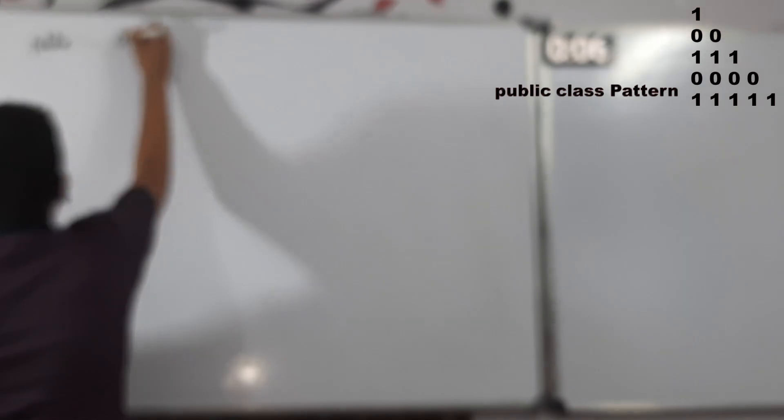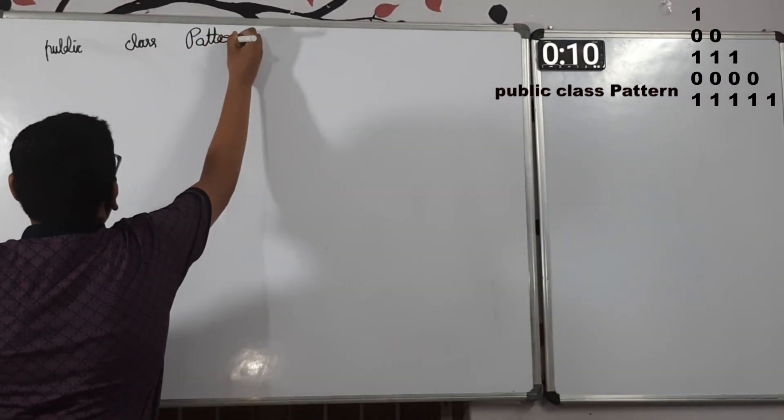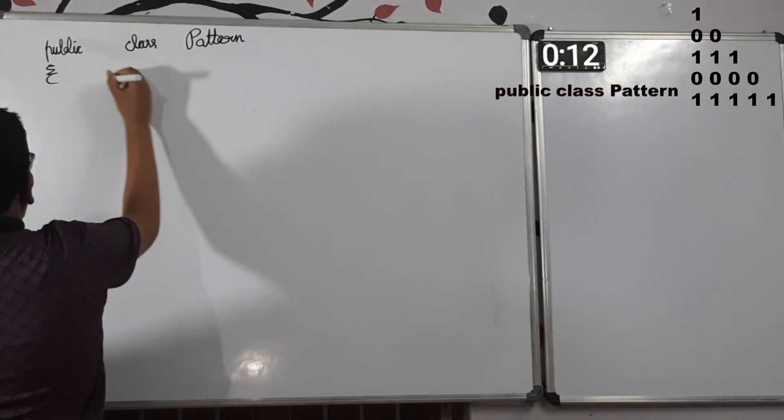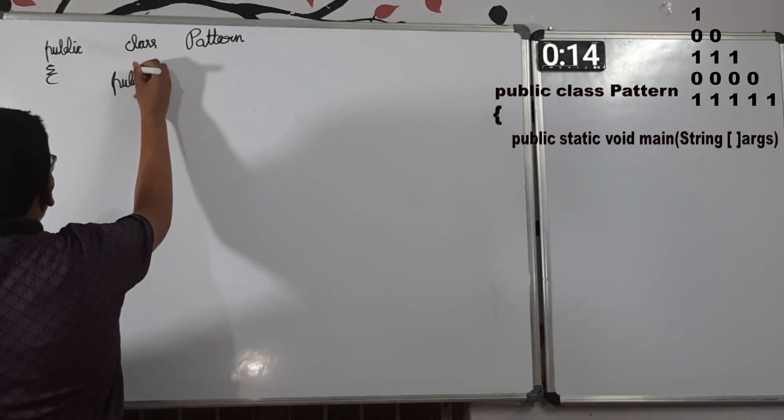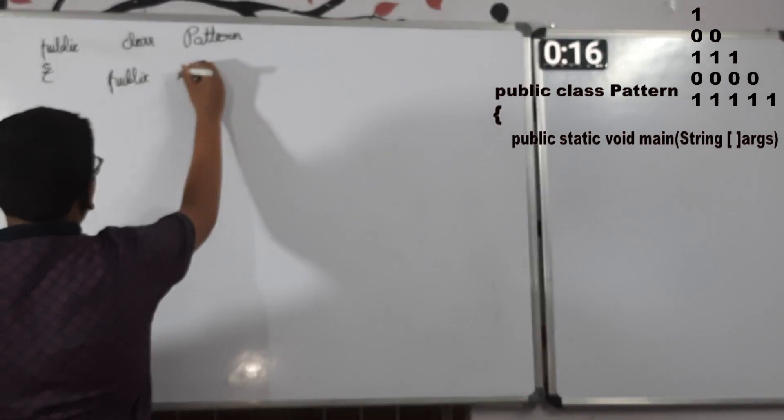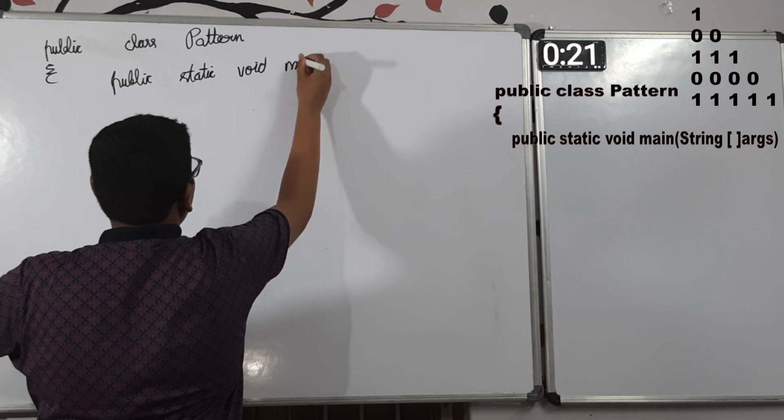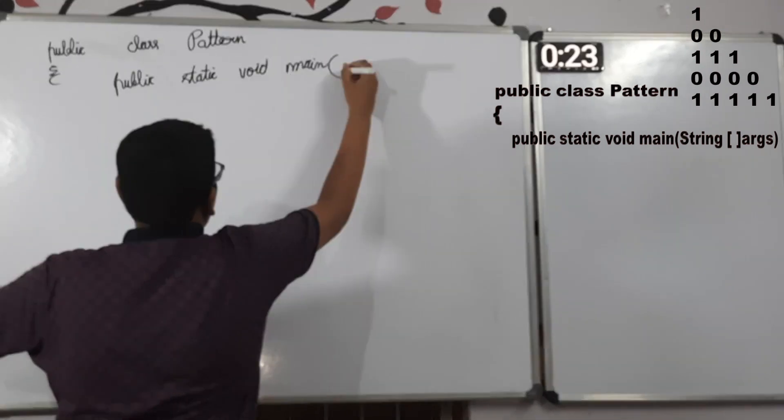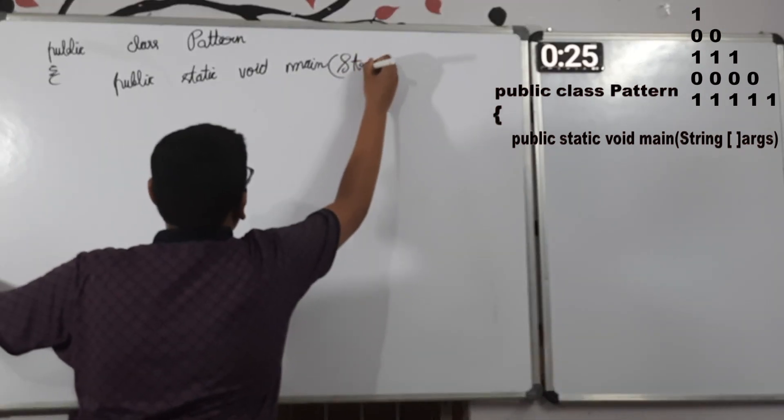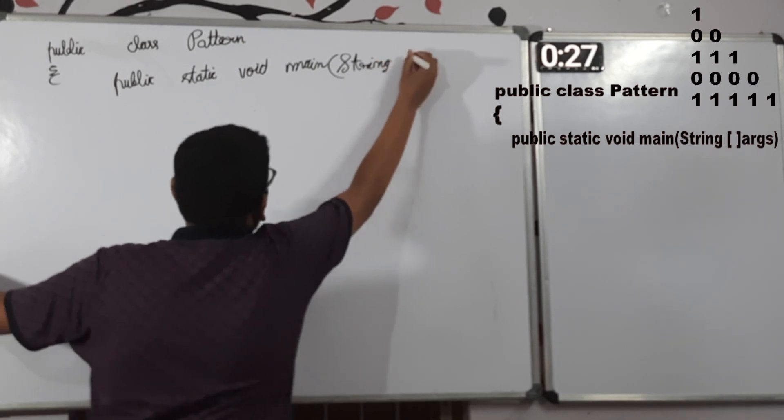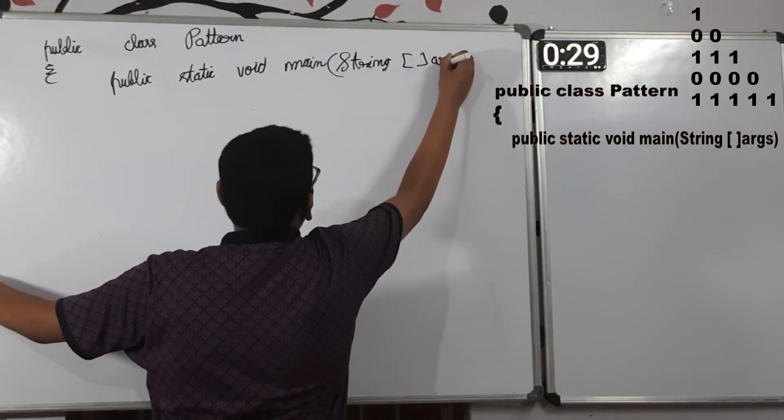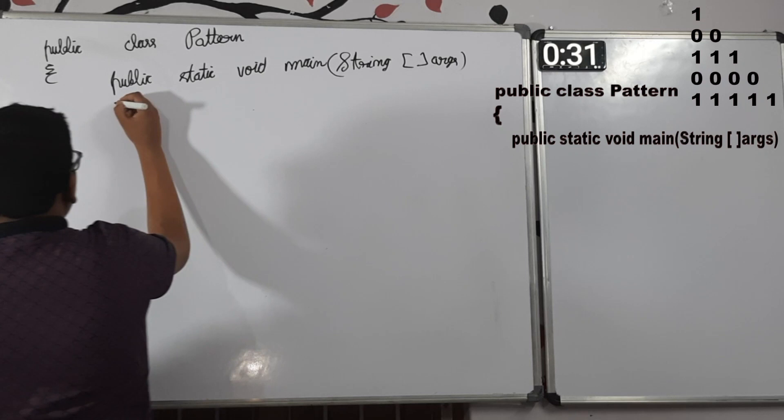Public class keyword, pattern class name. Opening scope for class. Public, static, void, main, within parentheses string arguments. Now, opening scope for main method.